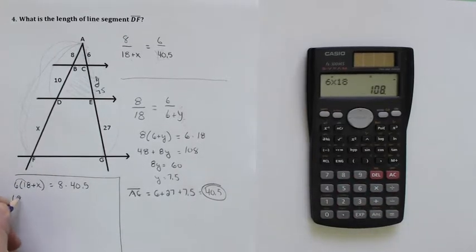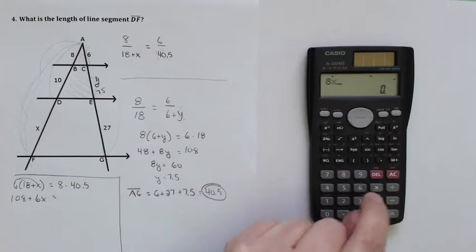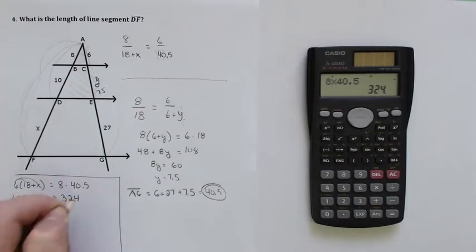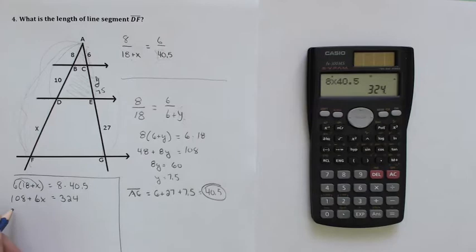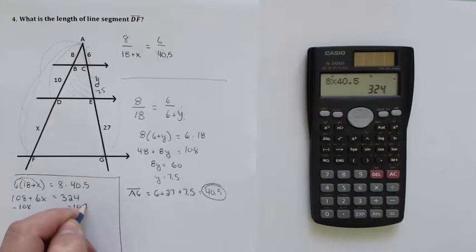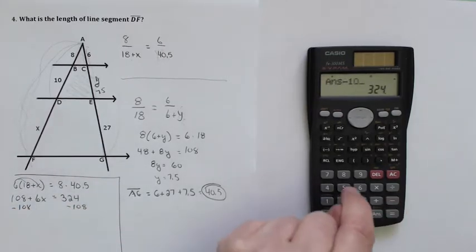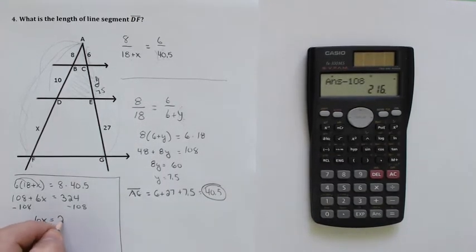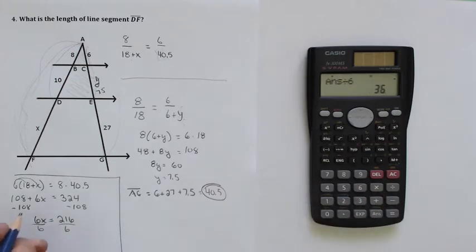Plus, be careful, 6X, not X, is equal to 8 times 40.5 is equal to 324. Then we're going to subtract 108, and that gives me 216, so 6X is equal to 216. I've got to divide everything by 6. 36 is my X.